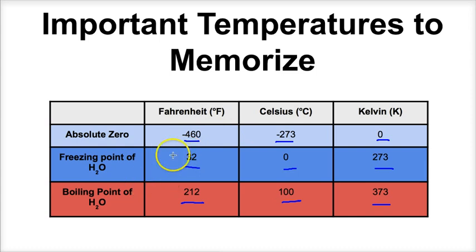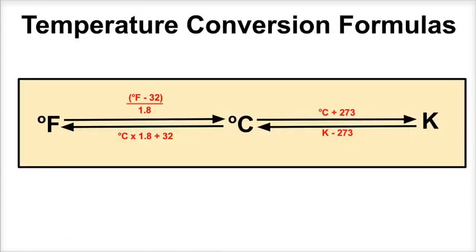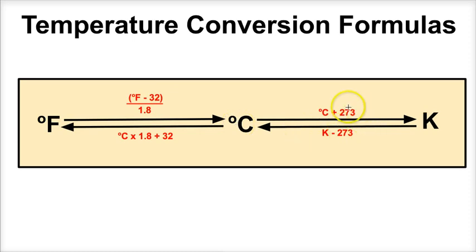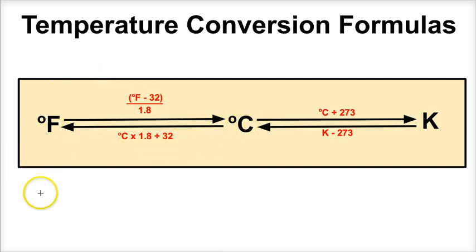Now let's take a look at how we're going to convert between these different temperature scales. Here are the formulas: to go from Fahrenheit to Celsius, here's the formula; Celsius to Kelvin, here's the formula; Kelvin to Celsius, here's the formula; and Celsius to Fahrenheit, here's the formula. If you want to go from Fahrenheit to Kelvin, this is going to be a two-step process. And if you want to go from Kelvin all the way to Fahrenheit, you're going to have to do two steps as well. So let's use this diagram to solve a few example problems.